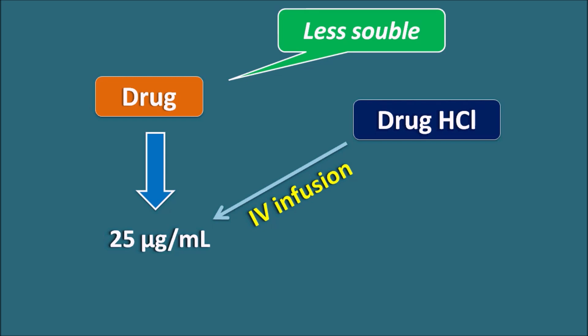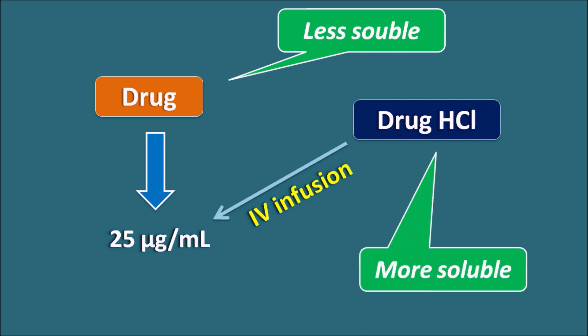The hydrochloride form is used because converting the drug to its salt form improves water solubility. The hydrochloride form is more soluble compared to the drug itself, so during IV infusion we use the salt form. However, drug salts are not quantitatively equivalent to the plain drug, so we must apply a correction factor when calculating the infusion rate and loading dose.